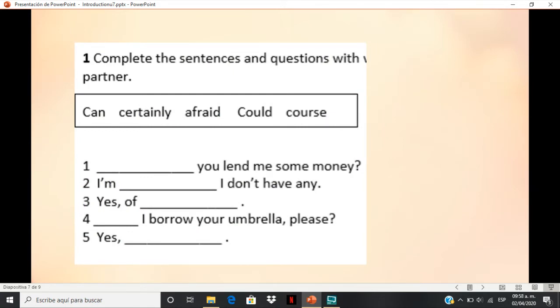Now, let's try to complete these sentences with the words from the box: can, certainly, afraid, could, or course. So, we have for number one, you lend me some money. I am, I don't have any. I borrow your umbrella, please. So, try to complete the sentence orally, try not to write.